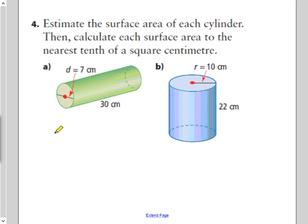This is Grade 8, the second part on the surface area of three-dimensional objects. So far we've covered in our previous video how to calculate the surface area of rectangular prisms, triangular prisms, and cubes. This video is simply about calculating the surface area of cylinders.